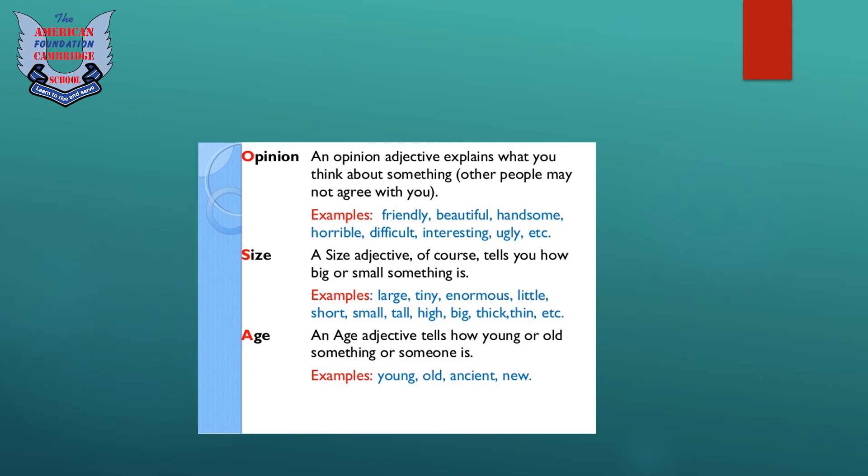Age. An age adjective tells you how young or old something or someone is. Examples: young, old, ancient, new.